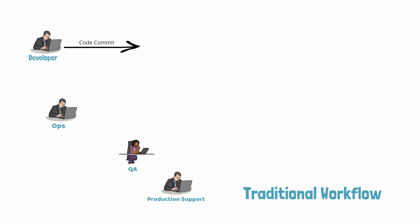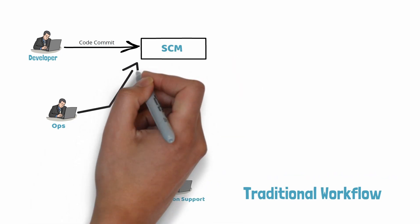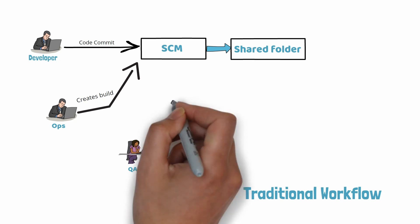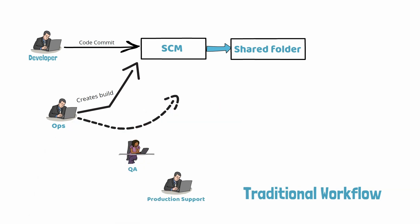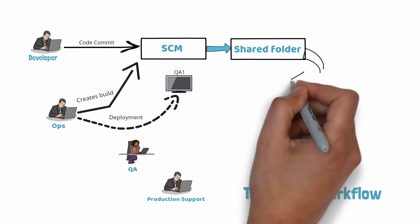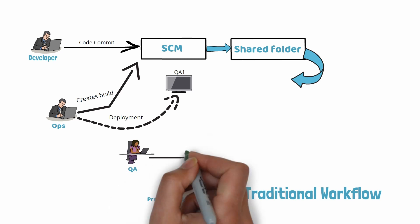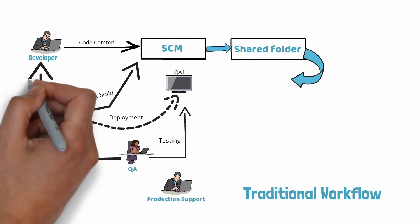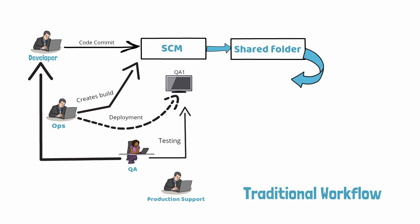Multiple developers commit the code to a version control system. Once the code is committed and approved, someone from the ops team would then create a build using the code base that was committed. The build is then placed to a shared folder or a network drive or on an environment. The ops team would then deploy the build to a lower environment such as quality assurance, after transferring the build to that environment. The testing team is then notified and they start executing their test cases against the build. Reports are then provided to the developers and other stakeholders about the test cases.